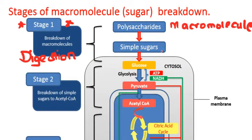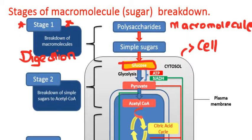Those simple sugars then enter the cell — as you can see, that's a picture of a cell we have right there in gray. And inside the cell, those simple sugars like glucose are then converted into pyruvate. The process is glycolysis, which is what we are studying today. Glycolysis results in the production of some ATP, right here — we call that substrate-level phosphorylation.